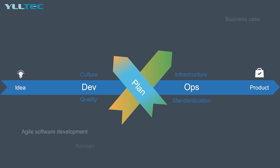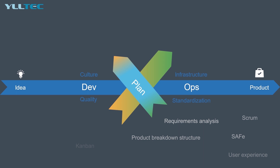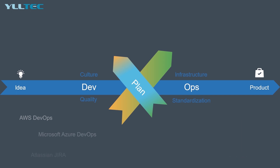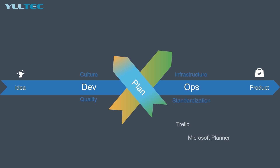Common disciplines and methodologies include agile software development, Kanban, product breakdown structure, work breakdown structure, requirements analysis, SAFe Scrum, and user experience. Common tools and technologies within the planning stage include Amazon DevOps, Microsoft Azure DevOps, Atlassian Jira, and lightweight planning tools like Trello and Planner. There are many more tools you can use for planning — this is just a couple of them.